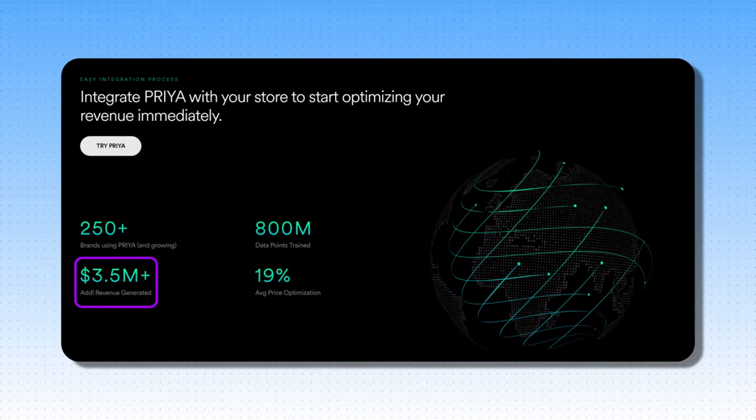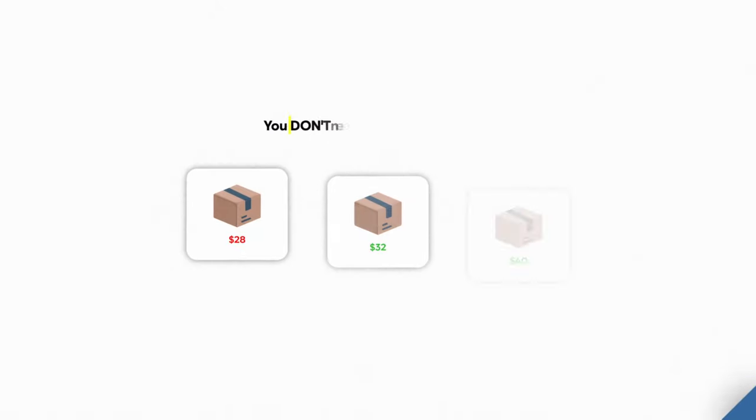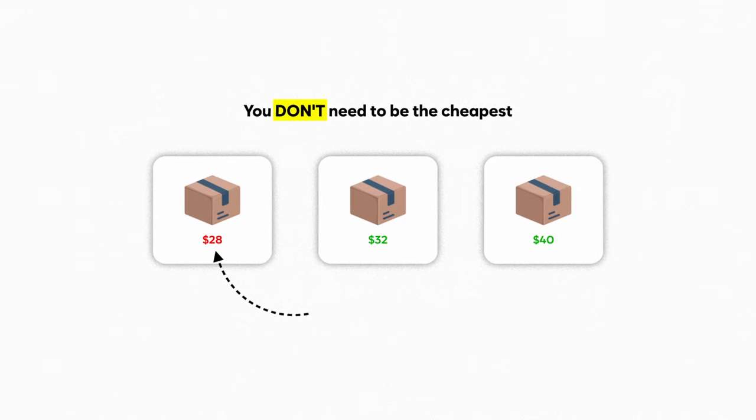Priya has already generated over $3.5 million in extra revenue just from these slight price increases for the brands it's integrated with. So many people underprice their products and are almost scared to increase by even a slight margin, fearing they'll miss out on the sale. But if your website is good, quick, trustworthy — not a typical spammy quickly-built Shopify store — once you build that trust, you can sell for a slightly higher price. You really don't need to be the cheapest amongst competitors to see success.